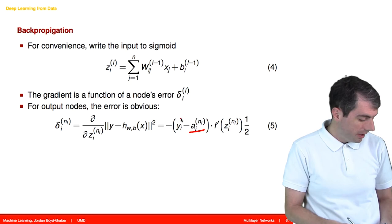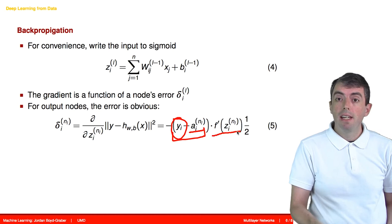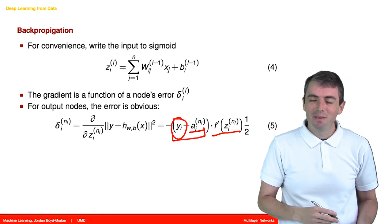Because you're applying the chain rule, you're going to multiply that by the derivative of the activation function. If you've forgotten your calculus or you never learned it in the first place, that's okay.